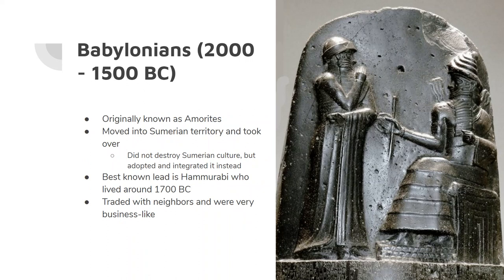Now Babylonians come after the Sumerians. Babylonians exist around 2000 to 1500 BC — only around for about 500 years or so. They were thought to be shepherds from north of Mesopotamia, and they were originally called the Amorites. These Amorites began moving further south into Mesopotamia and began to take over, and before long they had pretty much taken over Sumerian culture. They didn't destroy Sumeria — they worked their way in from the inside — and the Babylonians adopted a whole bunch of Sumerian culture, basically taking the Sumerian way of life and improving it.